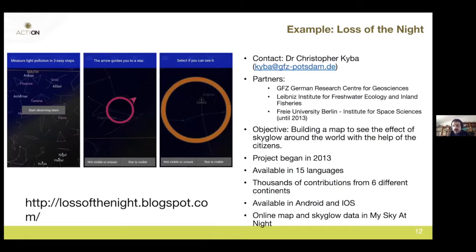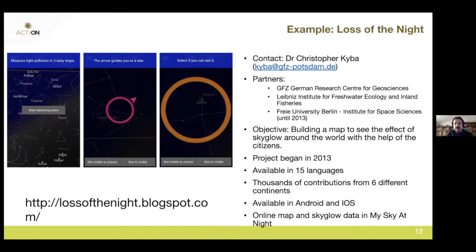An interesting solution — the Loss of the Night project, which Christopher Kyba knows very well — addresses this. With a mobile phone app, citizens can identify stars and report whether they can see them or not. The app also handles situations like clouds between you and a star: you can point directly at a specific star and tell the server whether you can or cannot see it. This improved the quality of the data significantly.